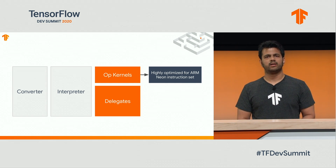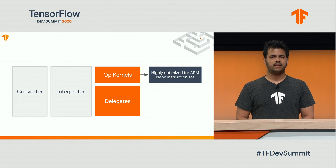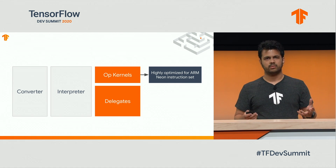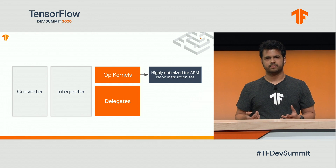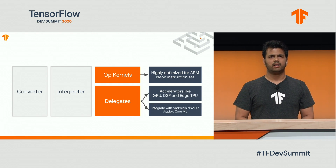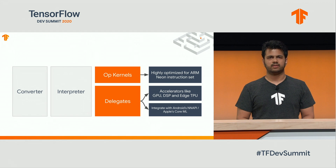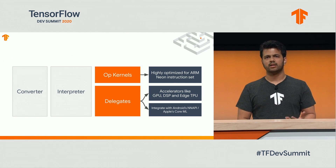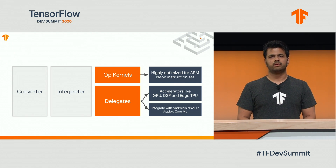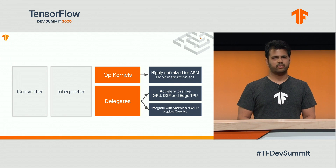This is where delegates come in. A delegate API acts like a bridge between the TensorFlow Lite runtime and lower level accelerator APIs. For example, our NNAPI delegate acts as an interface between TensorFlow Lite and Android's neural network API. Or the GPU delegate uses OpenCL and OpenGL to run inference on mobile GPUs on Android devices.